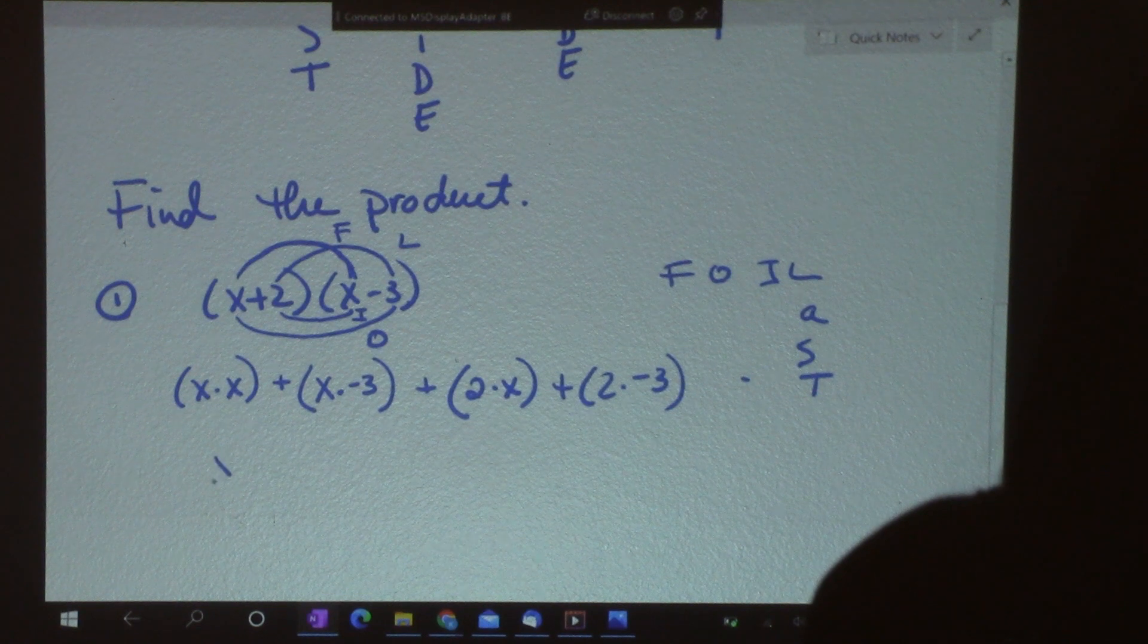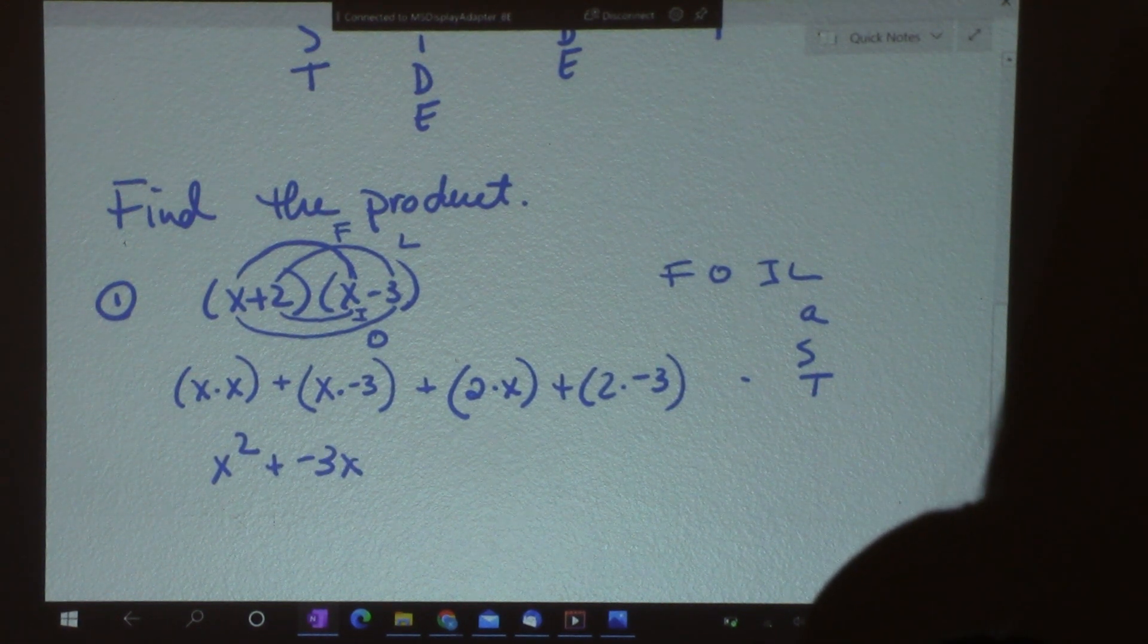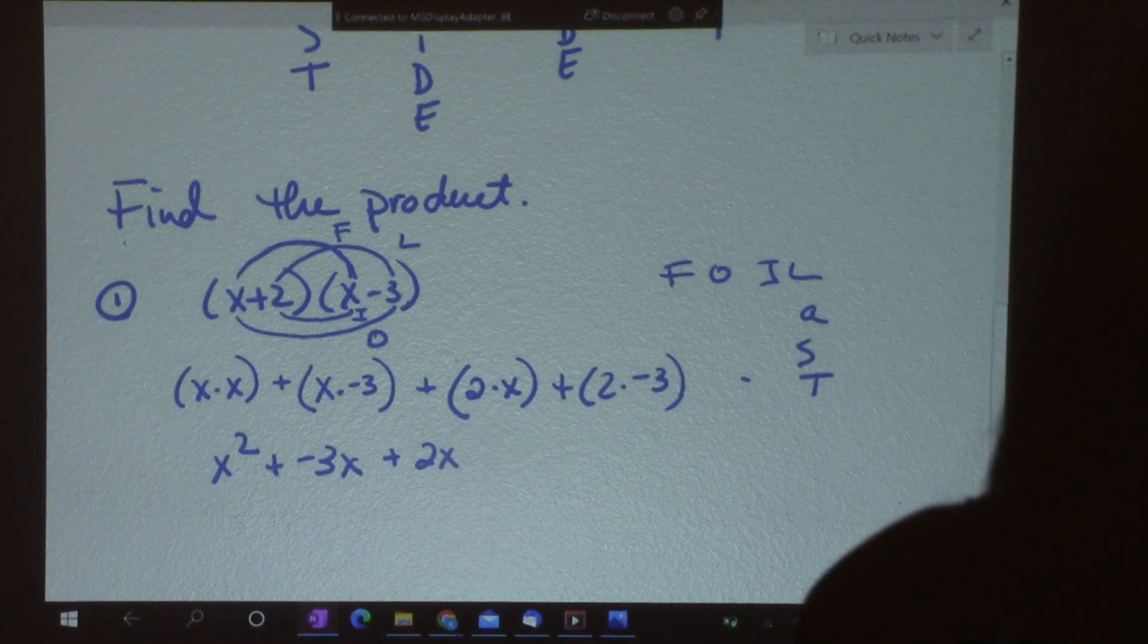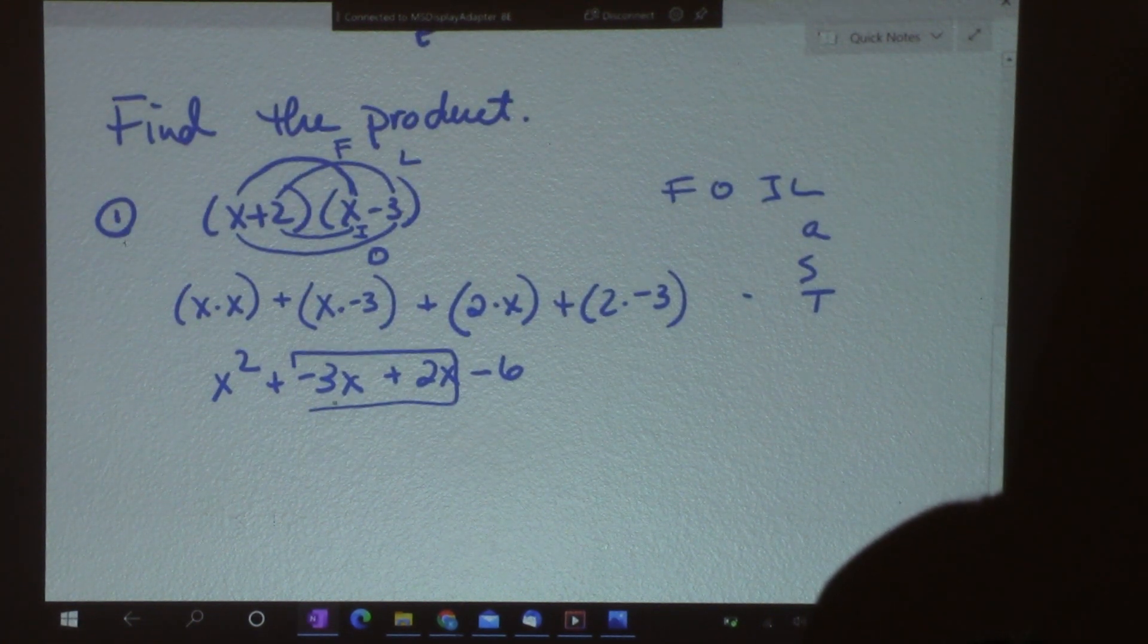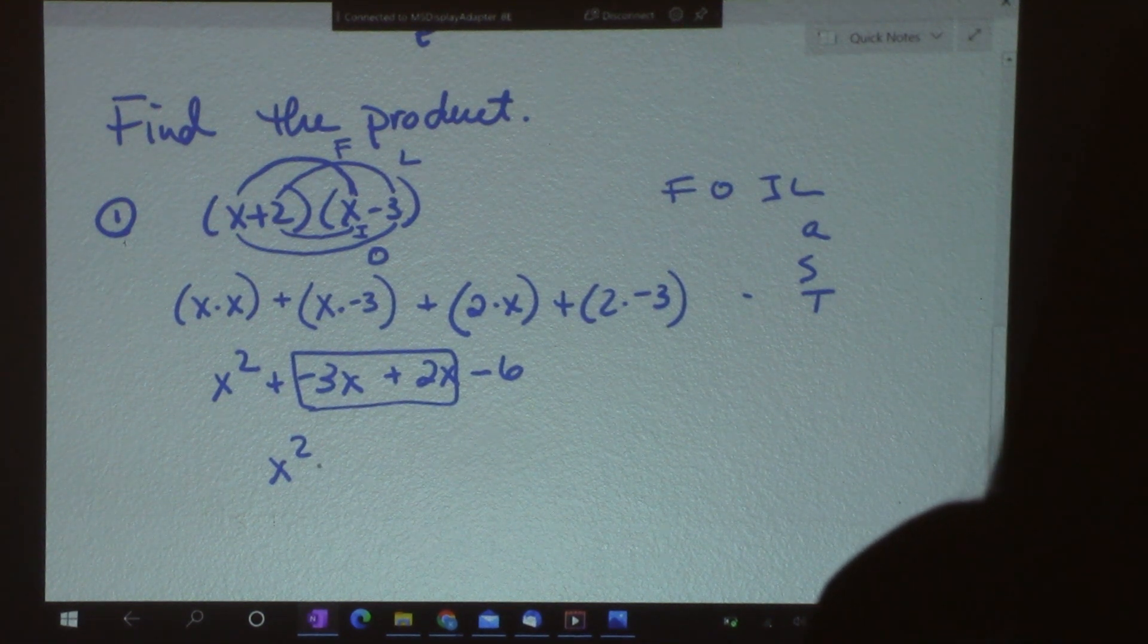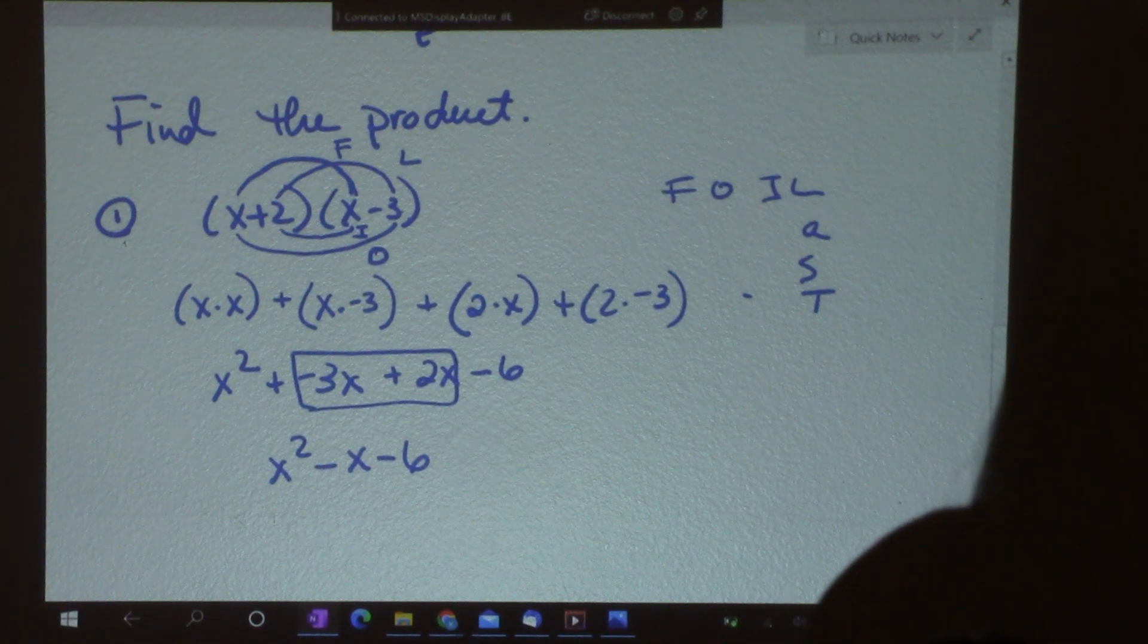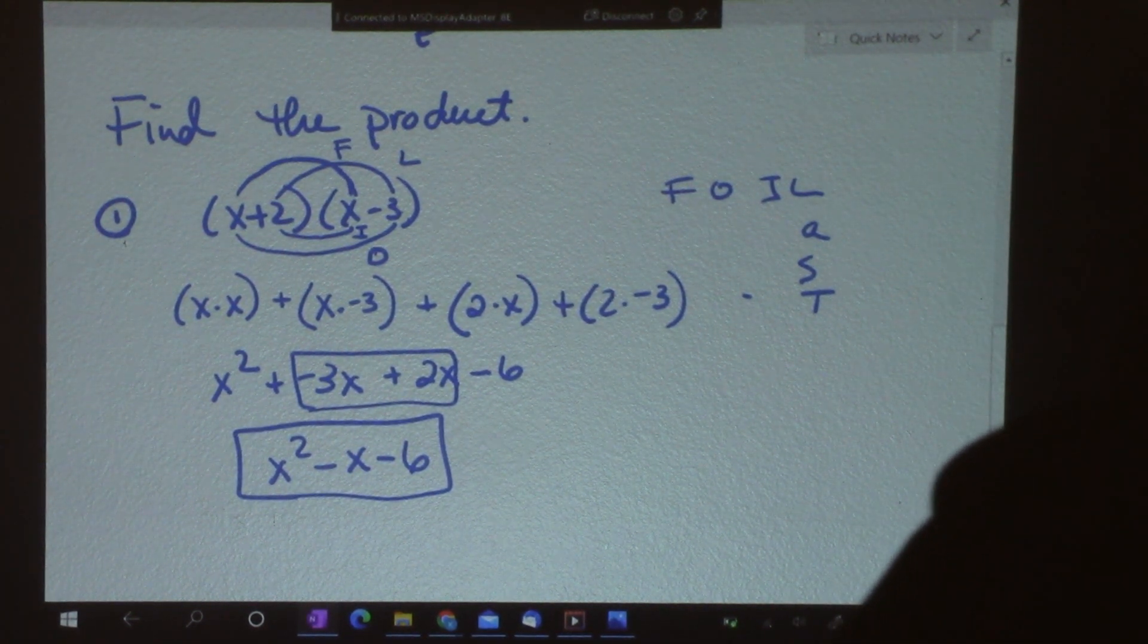So, now, I can simplify. x times x is x squared. x times negative 3 is negative 3x. 2 times x is 2x. And 2 times negative 3 is negative 6. And then, these two in the middle can be combined. So, negative 3x and positive 2x is negative x. x squared minus x minus 6. So, that is my final answer there.